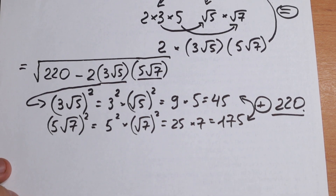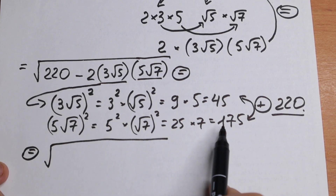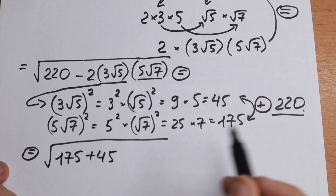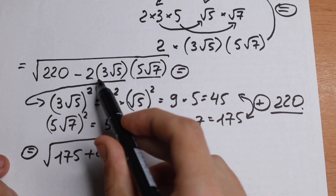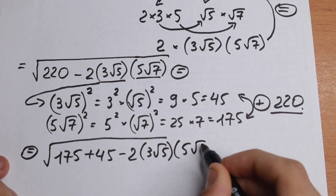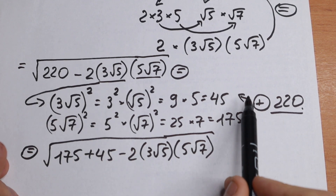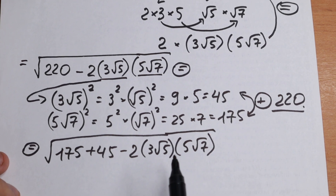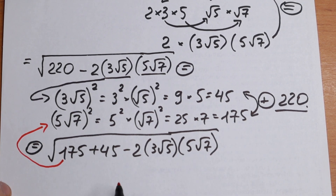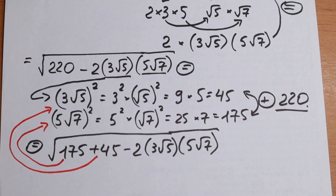So we can express 220 as the sum 175 plus 45. So let's do this and see what happens. The square root will be equal to the square root of (175 + 45) minus 2 times (3√5) times (5√7) — nothing has changed, we just rewrote 220 as 175 plus 45. Now, notice closely: 175 equals (5√7)², and 45 equals (3√5)². So let's substitute these values, since they are the same.